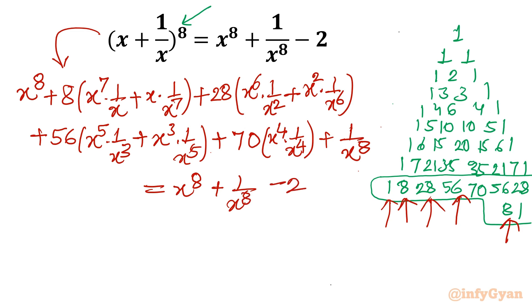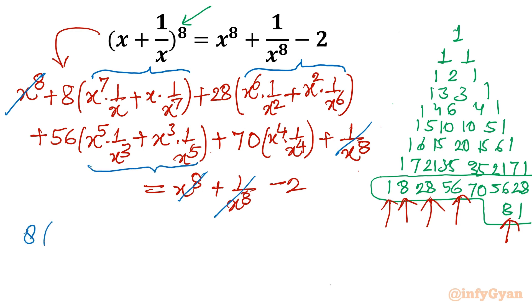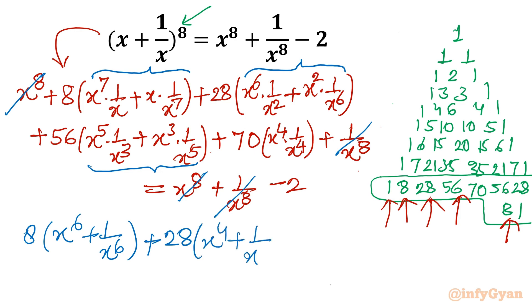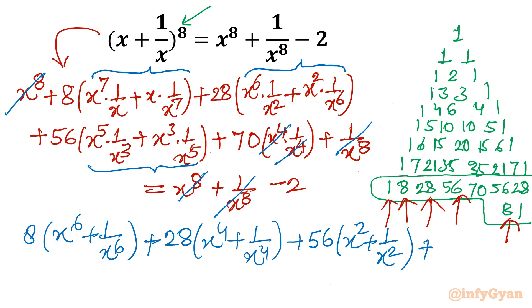Now I will do cancellation — whatever we can cancel, we will cancel. Let's cancel x^8 and 1/x^8 from both sides (first and last terms). After simplification we get: 8 times (x^6 + 1/x^6), plus 28 times (x^4 + 1/x^4), plus 56 times (x^2 + 1/x^2), and 70 is alone because x^4 times 1/x^4 cancels straight away. Plus 70.